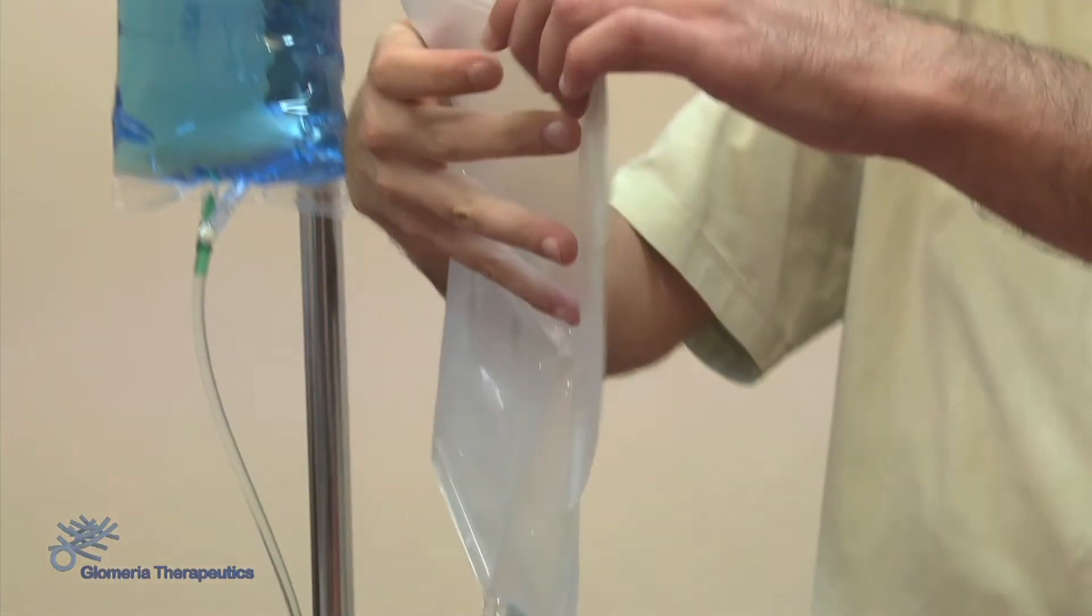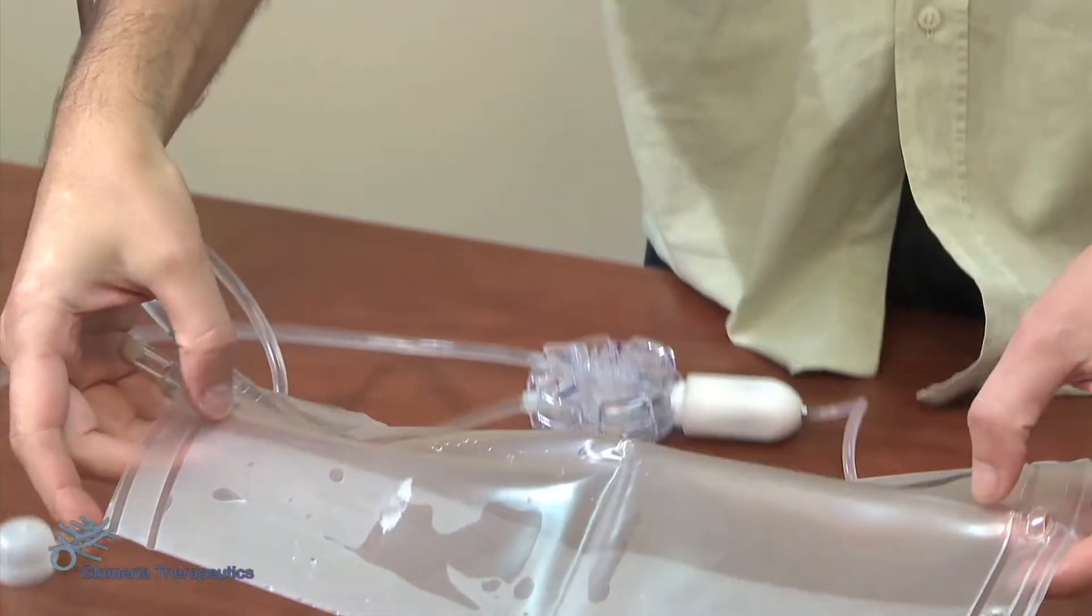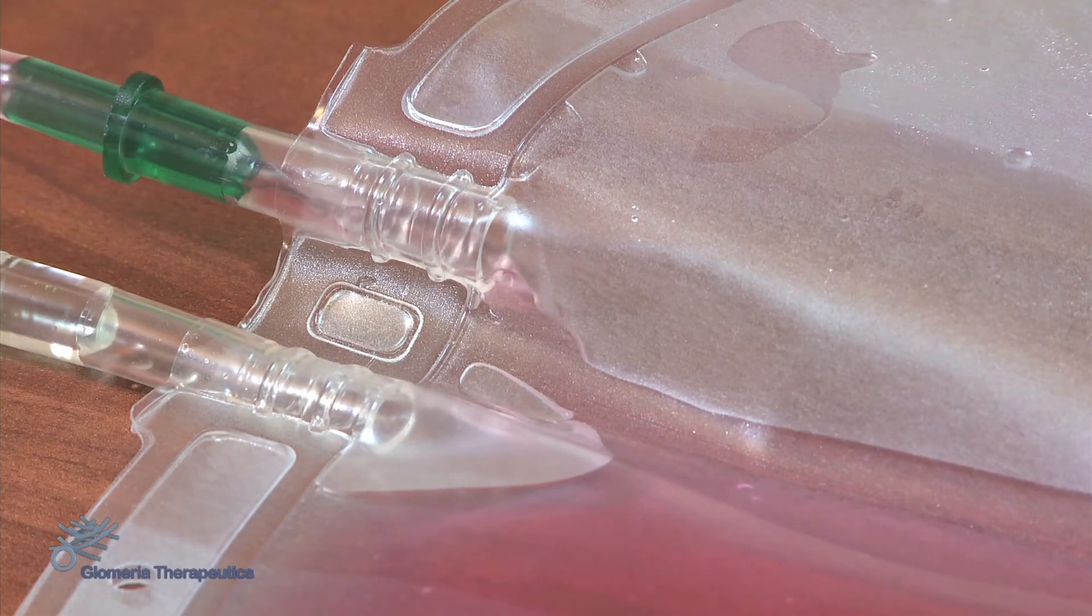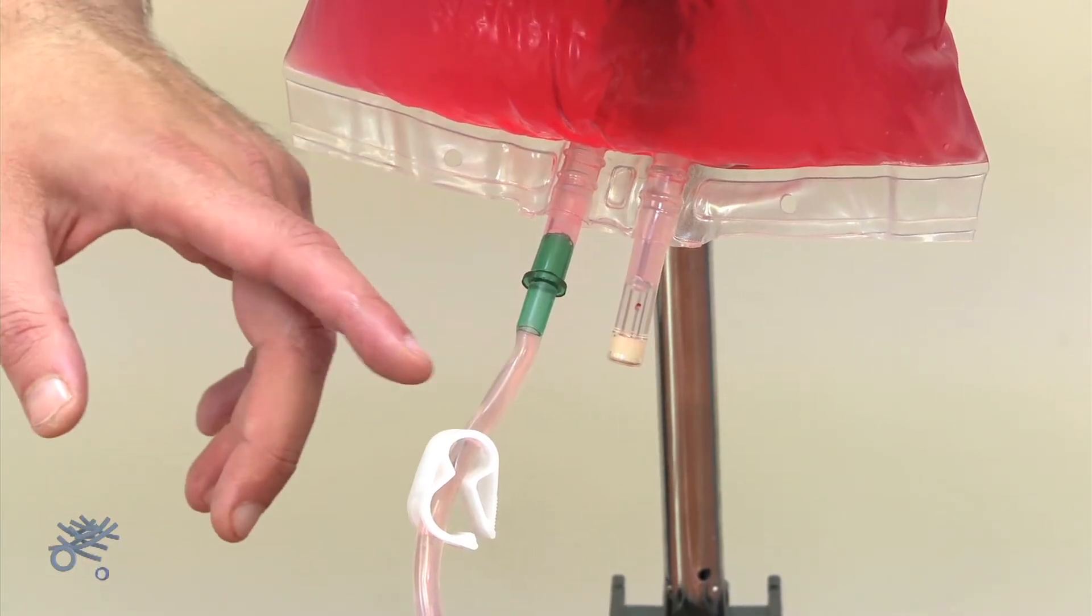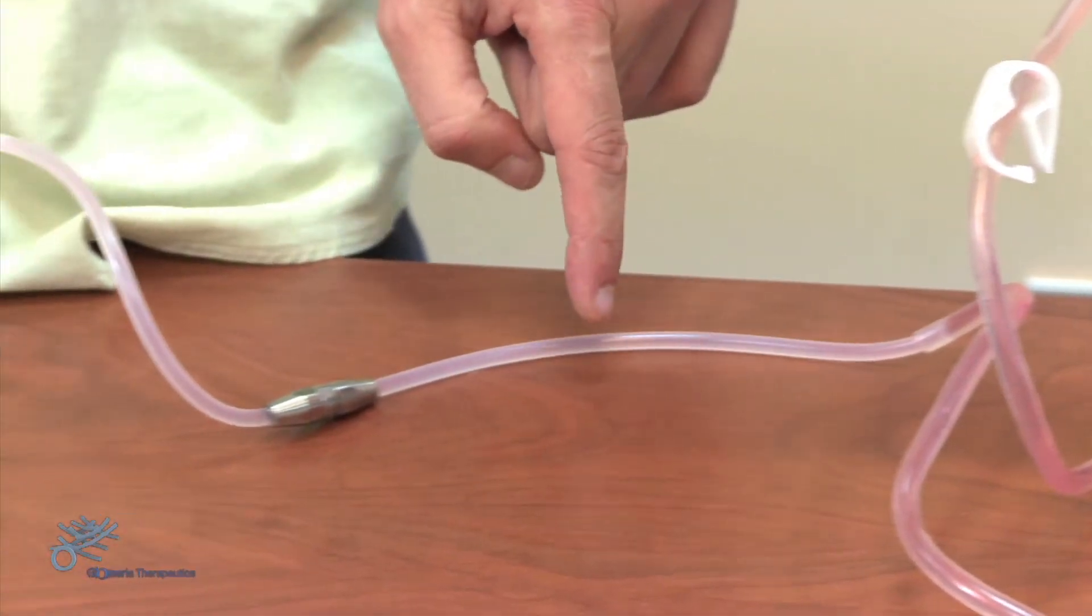We now unhook the empty bag and place it on the floor. The red-colored liquid in the bag, which simulates the peritoneum, flows towards the receptacle bag, filling it.